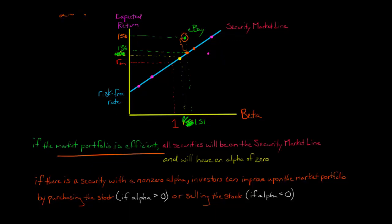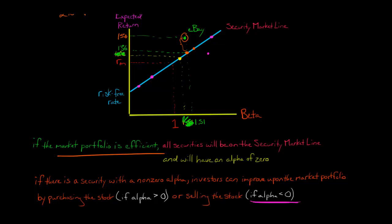Conceptually, if you're an investor and you see a stock that is not on the security market line — if it has a positive alpha, if alpha is greater than zero — then you could improve on the market portfolio. Instead of just holding the market portfolio, you could go and buy the stocks that have positive alphas. Then you could sell any of the stocks that have a negative alpha — any point that is below the security market line. You would sell those and buy the ones with a positive alpha up here, and you would actually be outperforming the market portfolio.